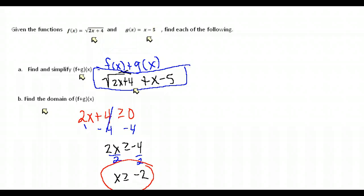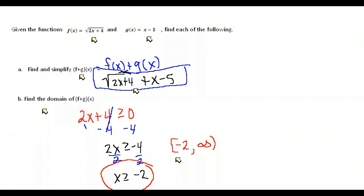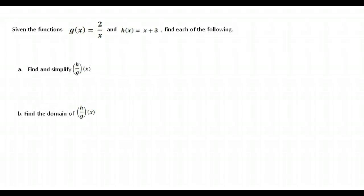Our domain is that x has to be greater than or equal to negative 2. In interval notation, numbers greater than or equal to negative 2 means we're going from negative 2 to positive infinity. Notice there's a square bracket on the negative 2 because we are including negative 2 in our domain — that's the 'equal to' part — and a parenthesis on infinity. So there are our results and our domain.